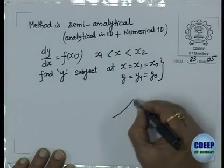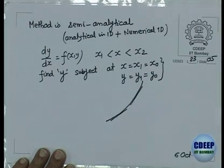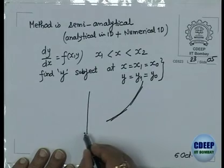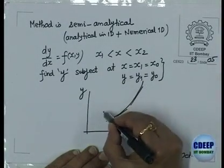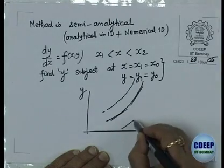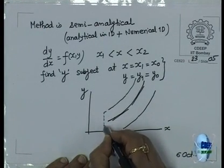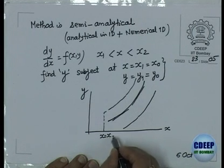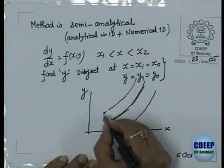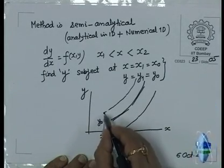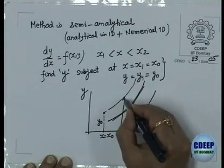The curve can be moved parallel to itself in the xy plane, so the initial condition fixes it. At one point - x equal to x-naught - y is specified as y-naught; that fixes the curve. We want to find y as a function - integration - of x. This is an initial value problem.